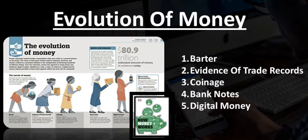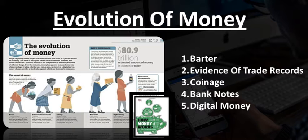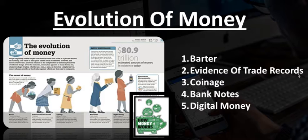So let's first talk about the evolution of money. Before, back in the days, what we used to do was barter. What does that mean? In order for us to exchange goods for other goods, or exchange commodities for other goods, we simply had to make fair trades. We had to barter. After a while, the whole barter system started to evolve. Next thing you know, there were evidence of trade records.